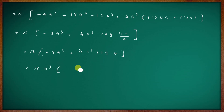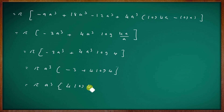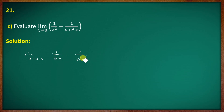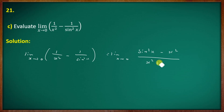Now the c question: evaluate limit x tends to 0 of 1 by x squared minus 1 by sin squared x. Combining the fractions gives sin squared x minus x squared divided by x squared sin squared x. Applying the limit gives the 0 by 0 indeterminate form, so we apply L'Hôpital's rule.